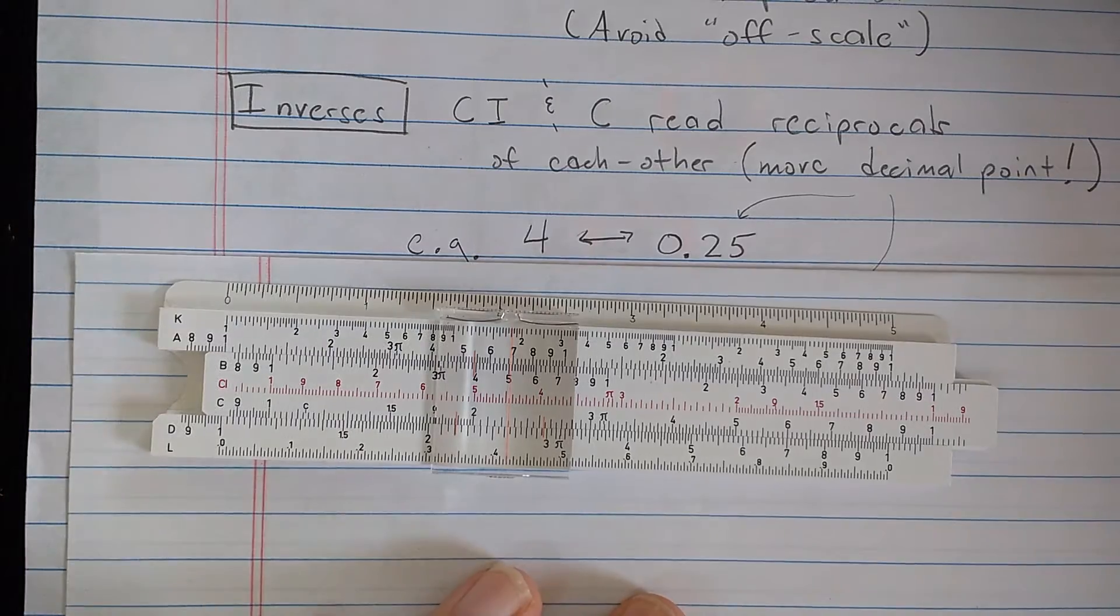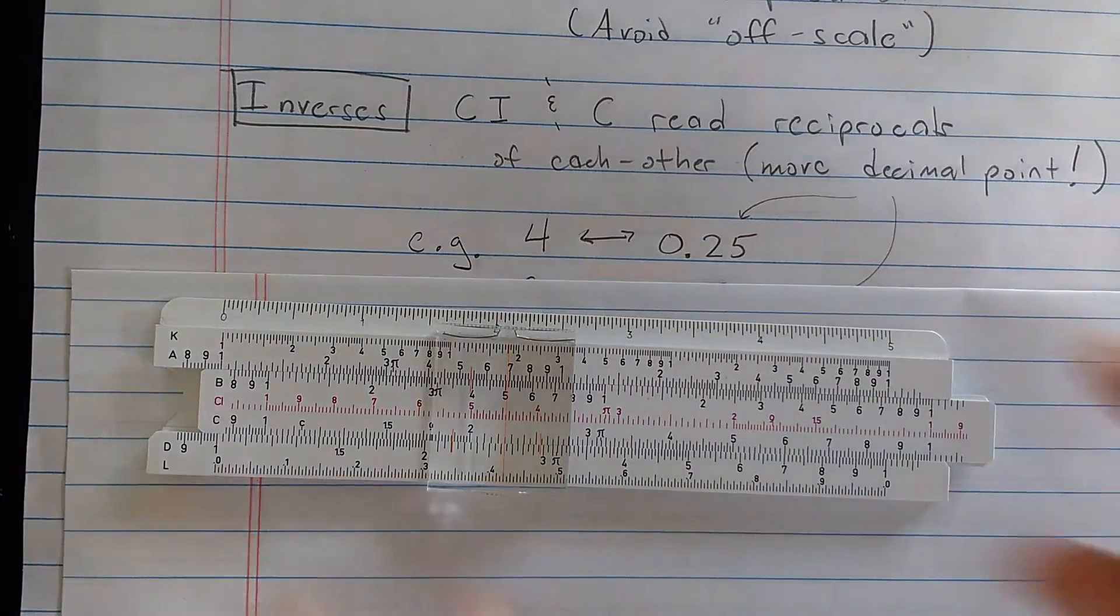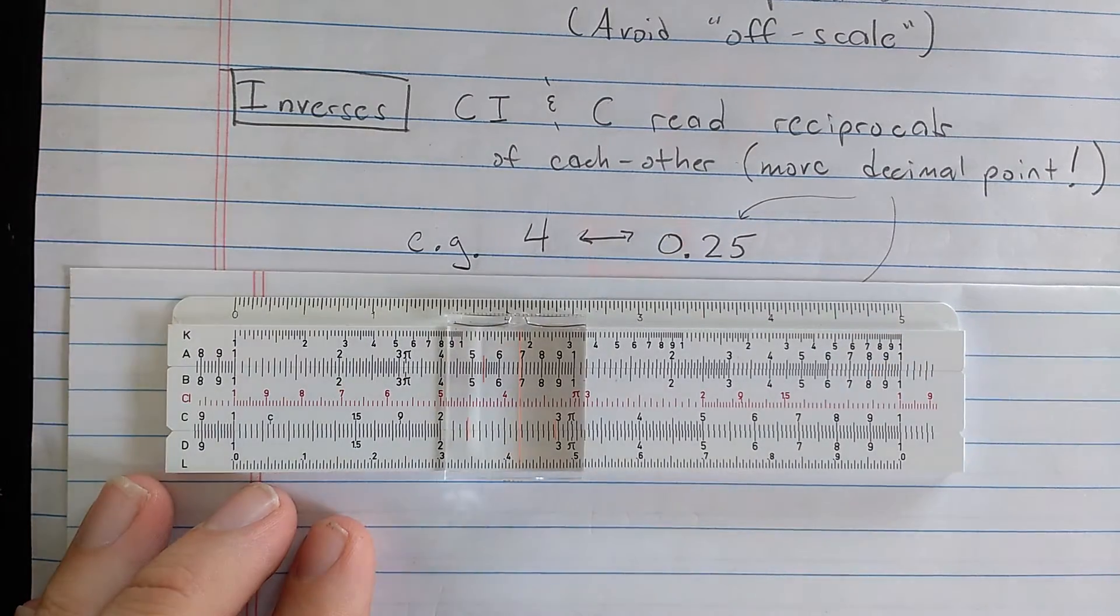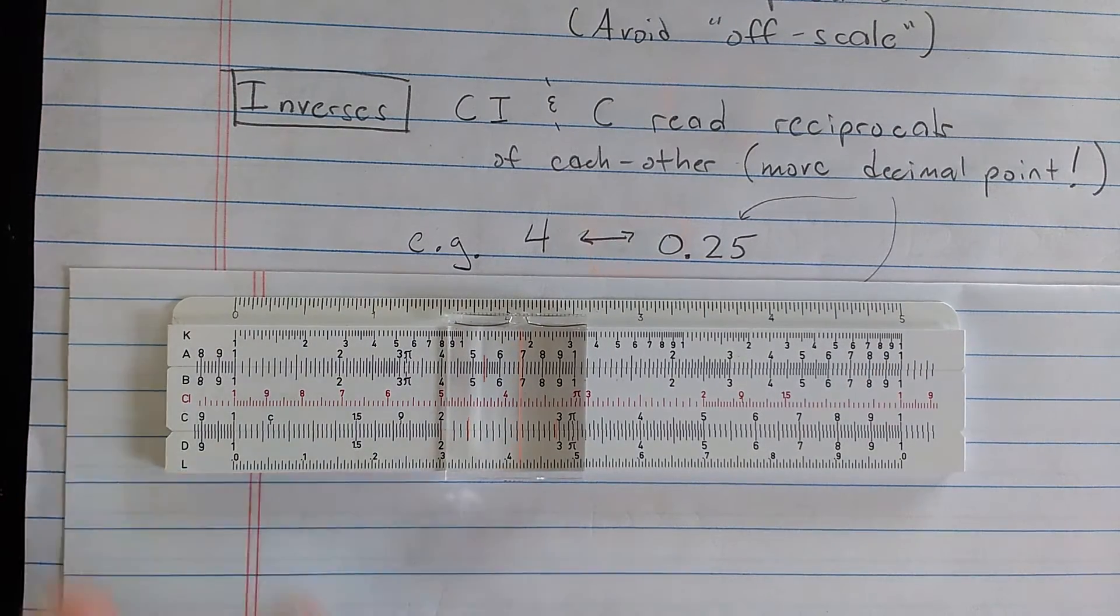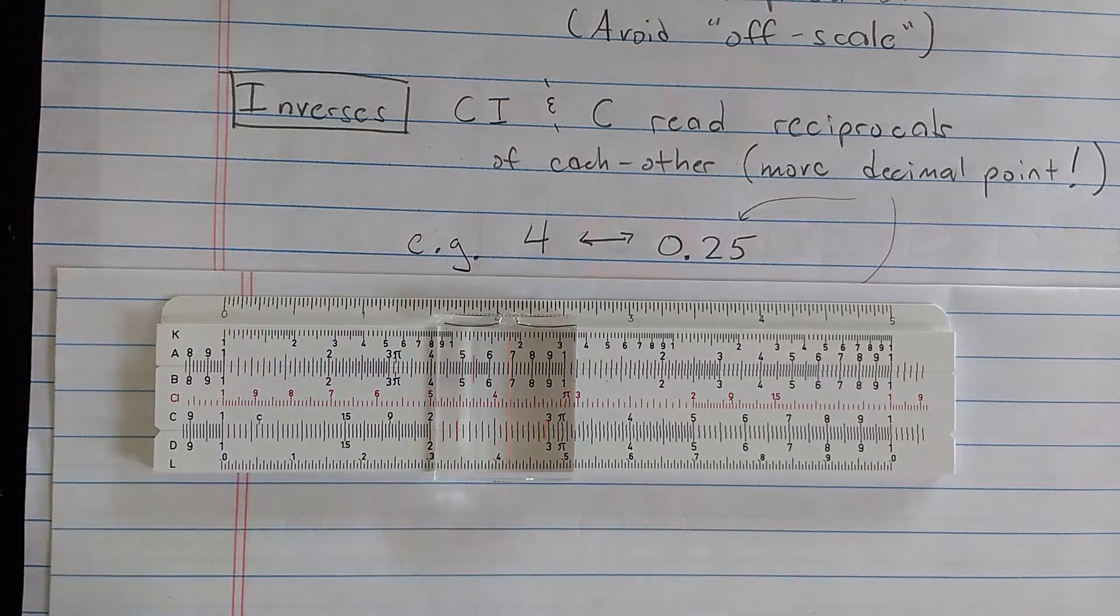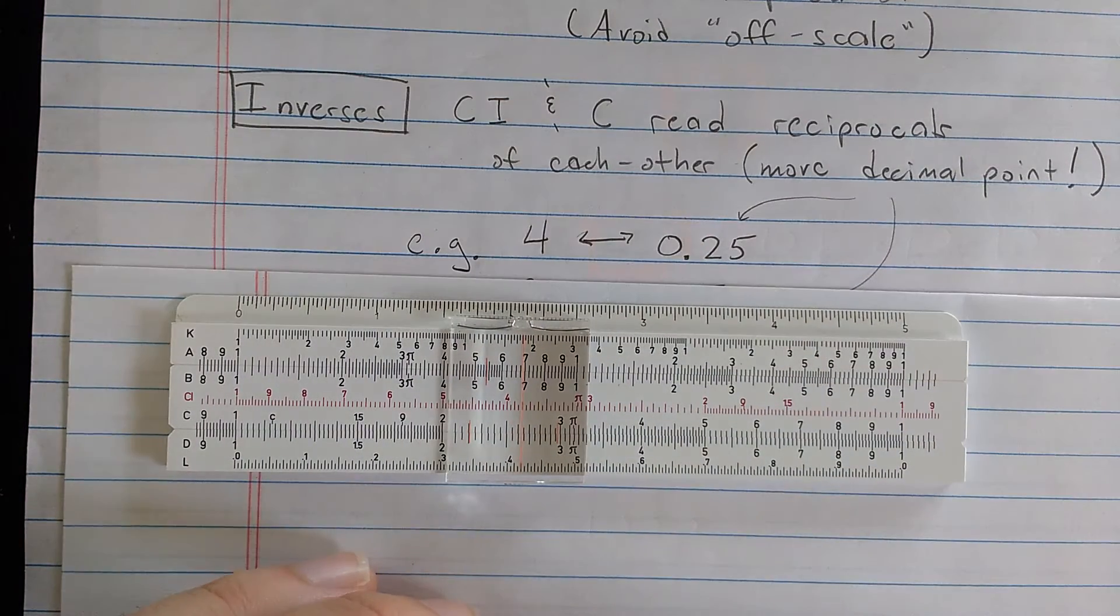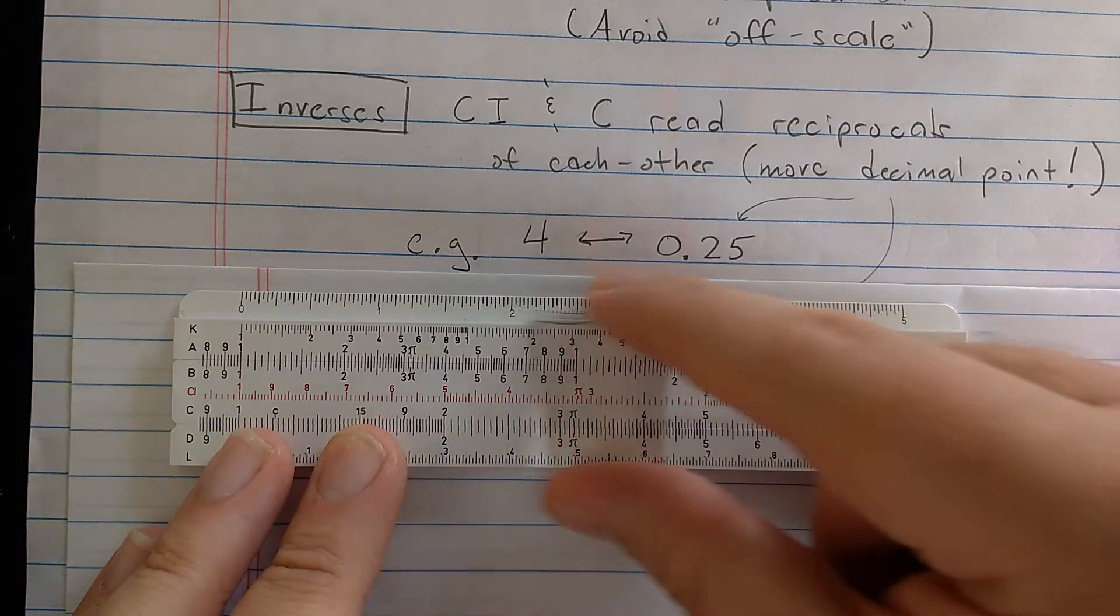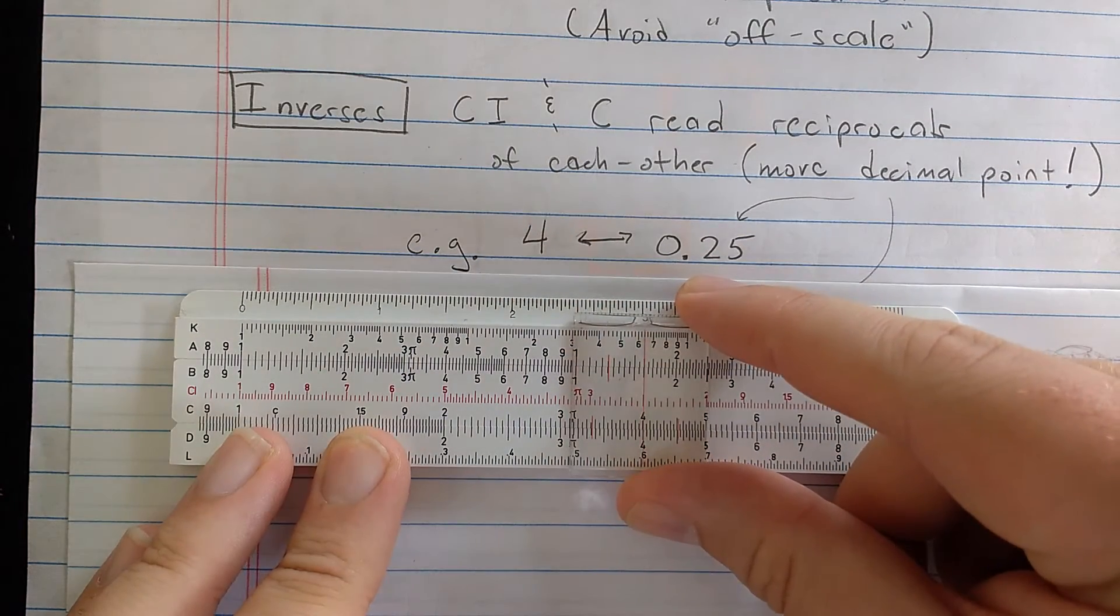First let's look at inverses. So the C and the CI scale, or if you align everything, the CI and the D also. But let's look at just the C and the CI scale. These read reciprocals of each other. So if I look at the C scale and I find the 4 with the cursor,